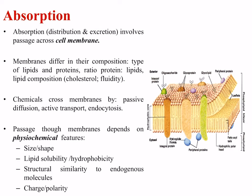Chemicals cross membranes by a number of different processes, including passive diffusion, active transport, and endocytosis. Passage through membranes depends on the physical-chemical properties of the molecules, such as its size, shape, lipid solubility or hydrophobicity, structural similarity to endogenous molecules, as well as its charge and polarity.